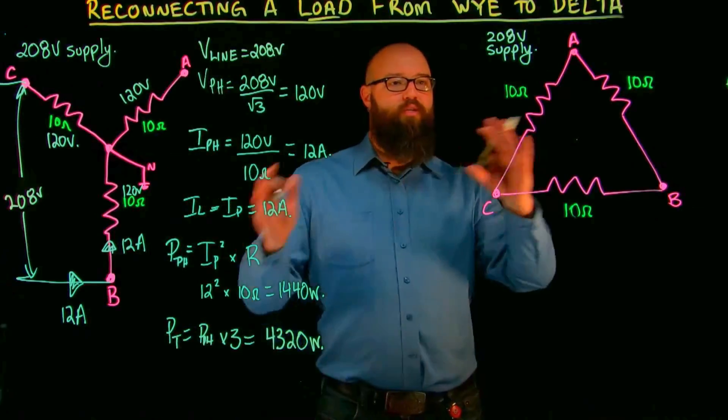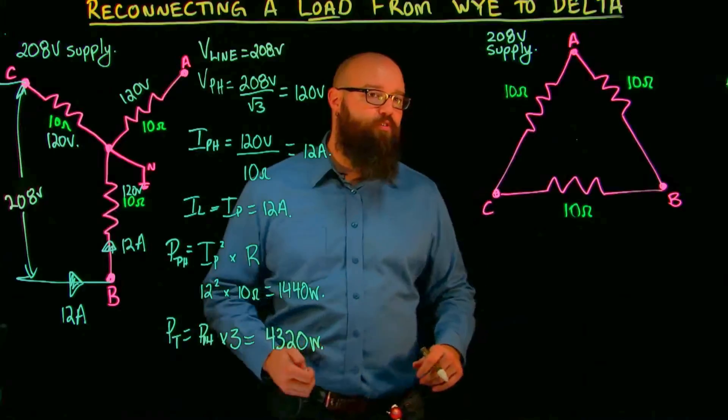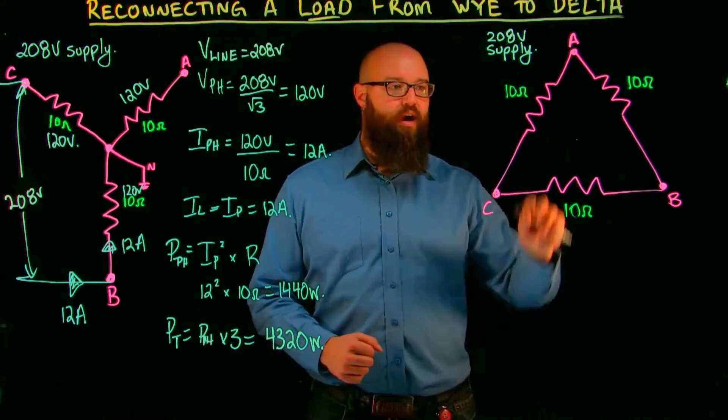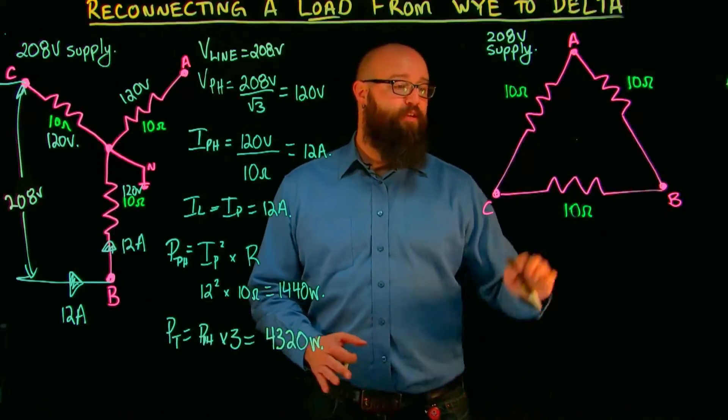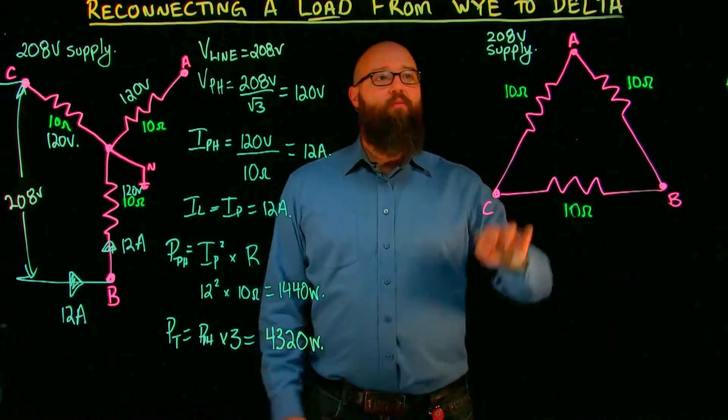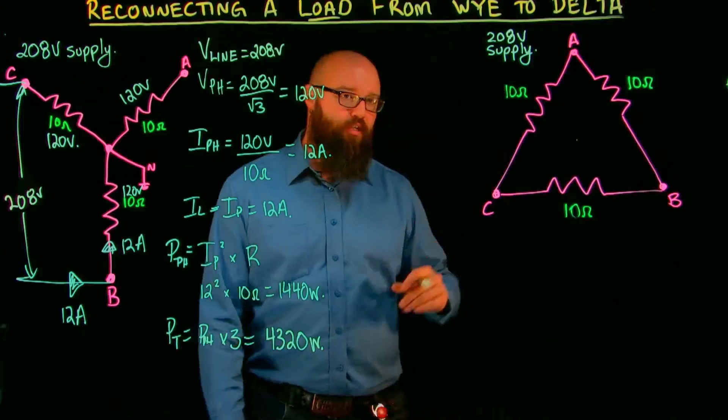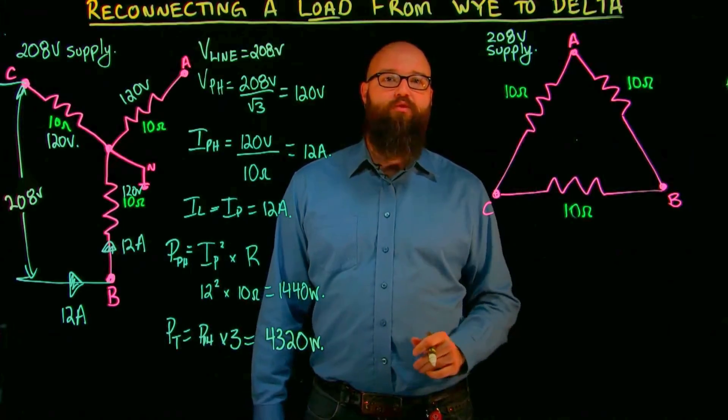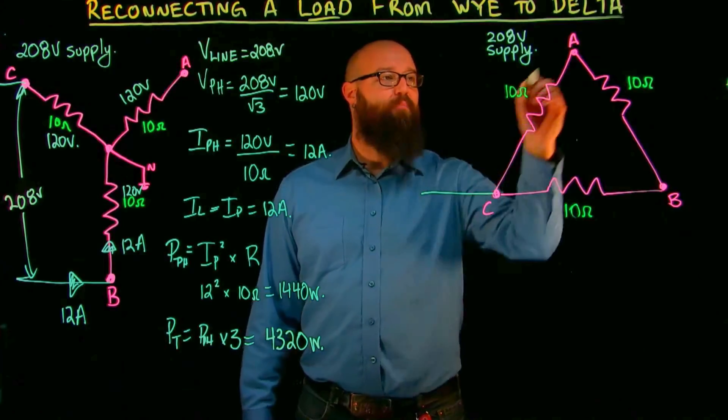The only thing that won't change is the physical impedance of the phase. That's a property of whatever this is. So when we look, we still have a 208 volt supply, and what we know about a delta connection is that my line voltage is equal to my phase voltage. If I apply 208 volts, it's like taking 208 volts right across the phase.